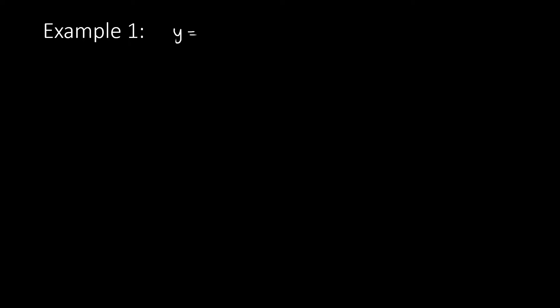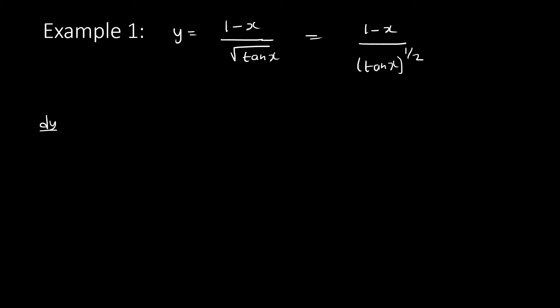Here's the first exam question: y equals (1 minus x) over the square root of tan x. I always like to rewrite the square root as an exponent — tan x to the power of a half — so the chain rule won't be confusing. This is u over v, so following the formula sheet: we start with v, which is (tan x)^(1/2), times the derivative of u.